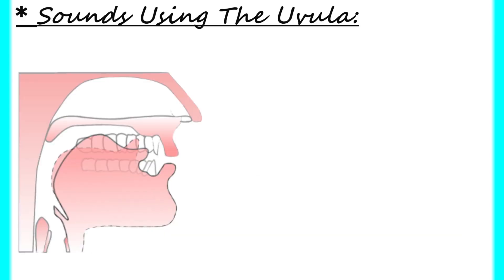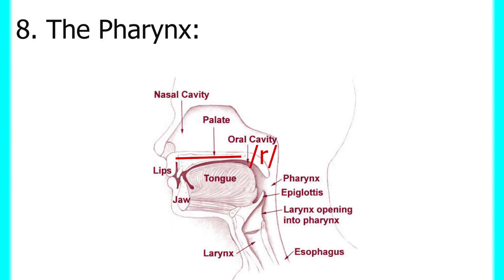The uvula is also involved in producing certain sounds in English, like the sound of the letter R, as in 'rats.'